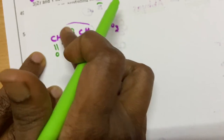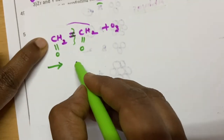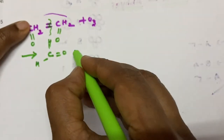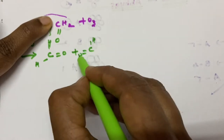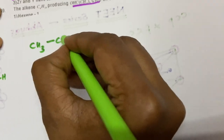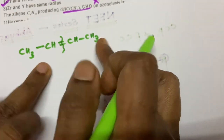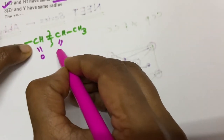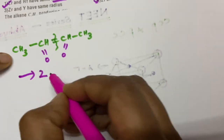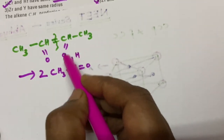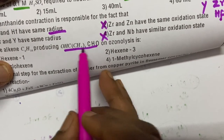So ozonolysis of CH₂=CH₂ yields two molecules of HCHO (formaldehyde). For CH₃–CH=CH–CH₃, ozonolysis gives two molecules of CH₃CHO. But if you closely observe, in some molecules there are not two separate molecules but a dialdehyde at both terminal ends within the same molecule. Let me write the structure: a chain of CH₂ groups — C=O with H here and C=O with H at the other end — that is the dialdehyde given.